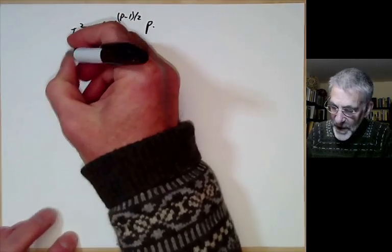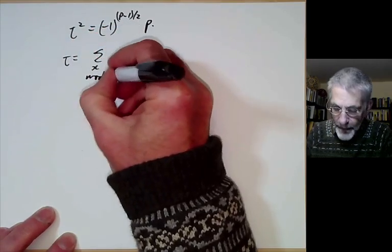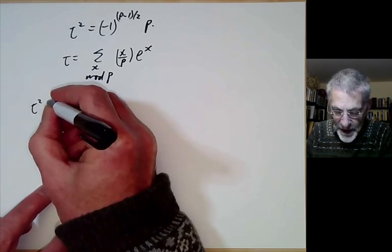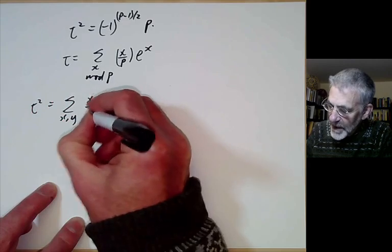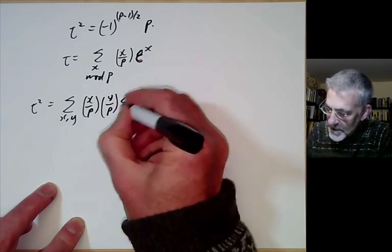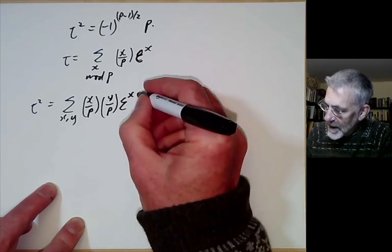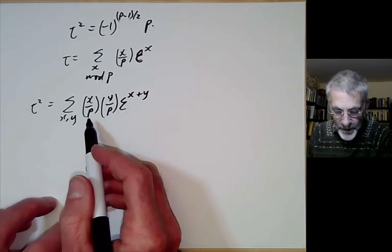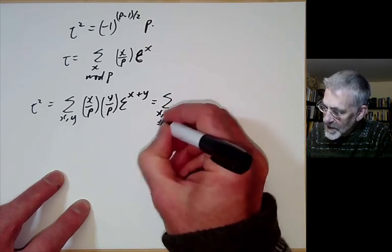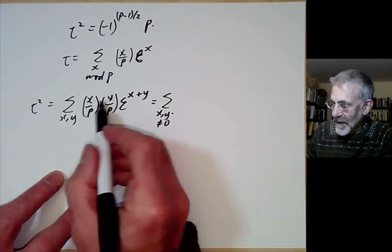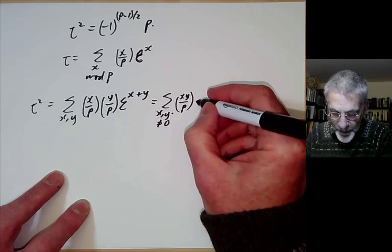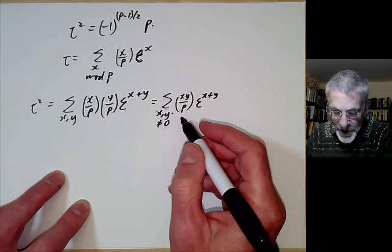To prove this, we take the formula for tau — the sum over x mod p of (x/p) · epsilon^x — and square it. So tau² equals the sum over x and y of (x/p)(y/p) · epsilon^(x+y). We sum over both x and y nonzero, since those terms vanish if x or y is zero. Then we make a change of variable, multiplying x by y, noting that (xy²/p) = (x/p), to get the sum over x, y nonzero of (x/p) · epsilon^((x+1)y).